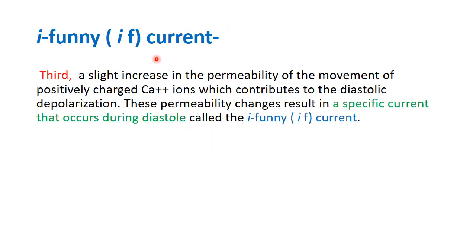The third cause involves a specific current occurring during diastole. The slight increase in permeability and movement of positively charged calcium ions contribute to diastolic depolarization. This is called the funny current because it is not typical and is specific to cardiac muscle, occurring during diastole.